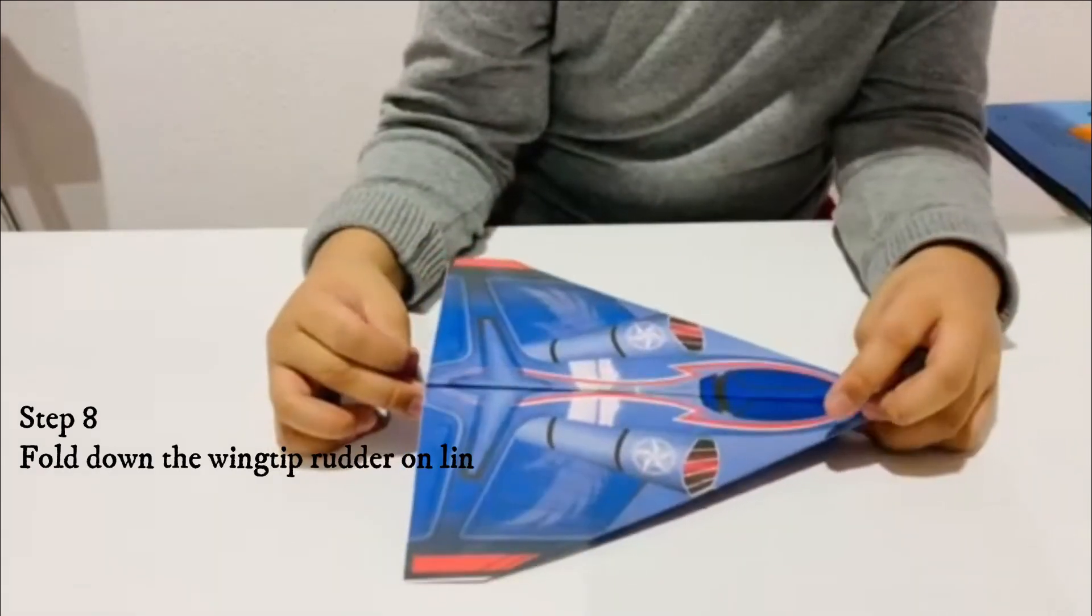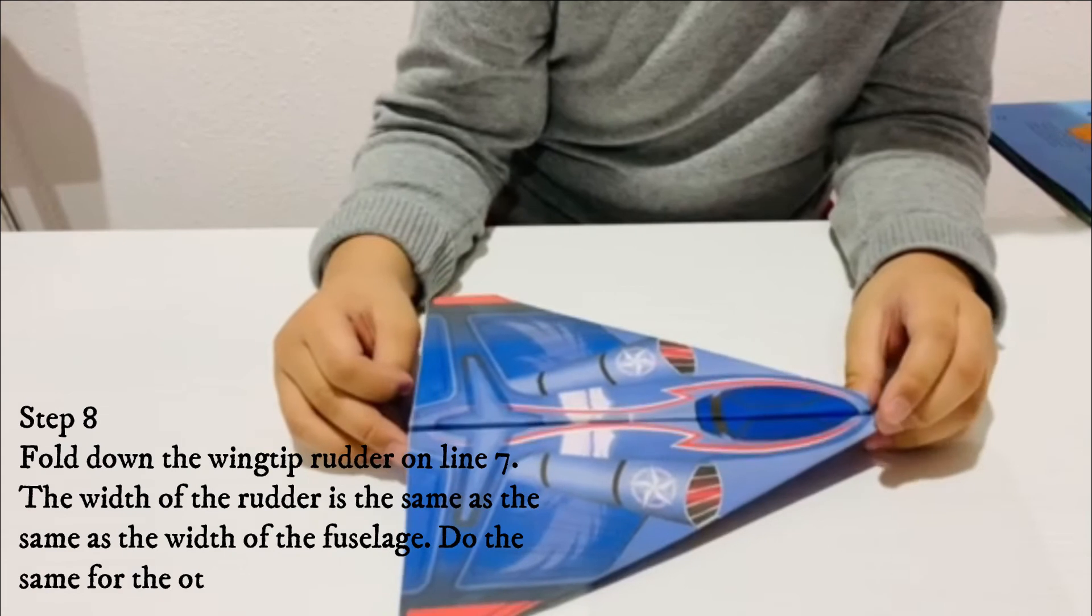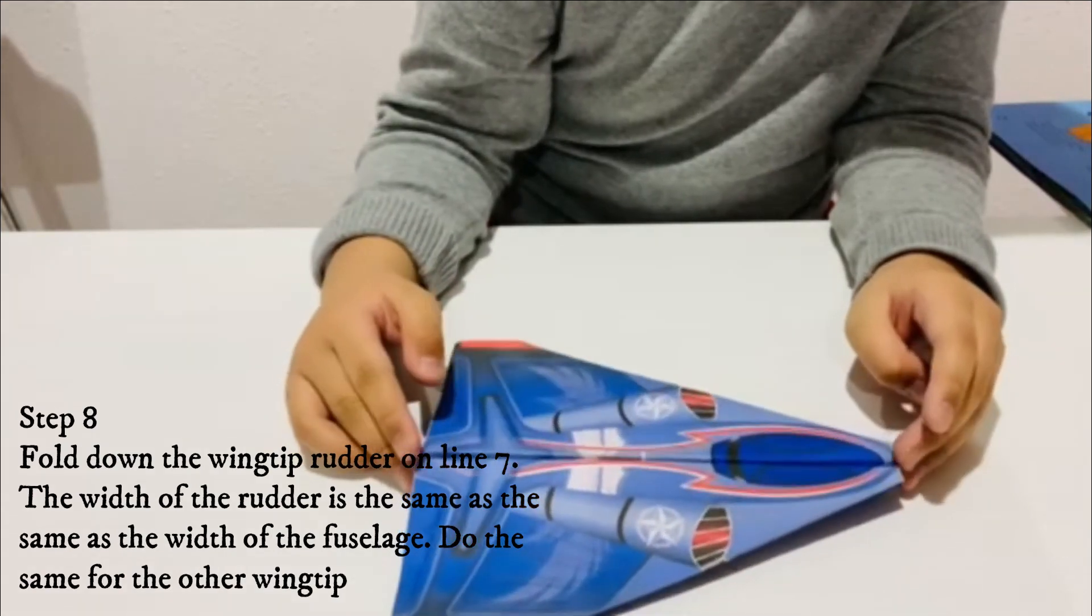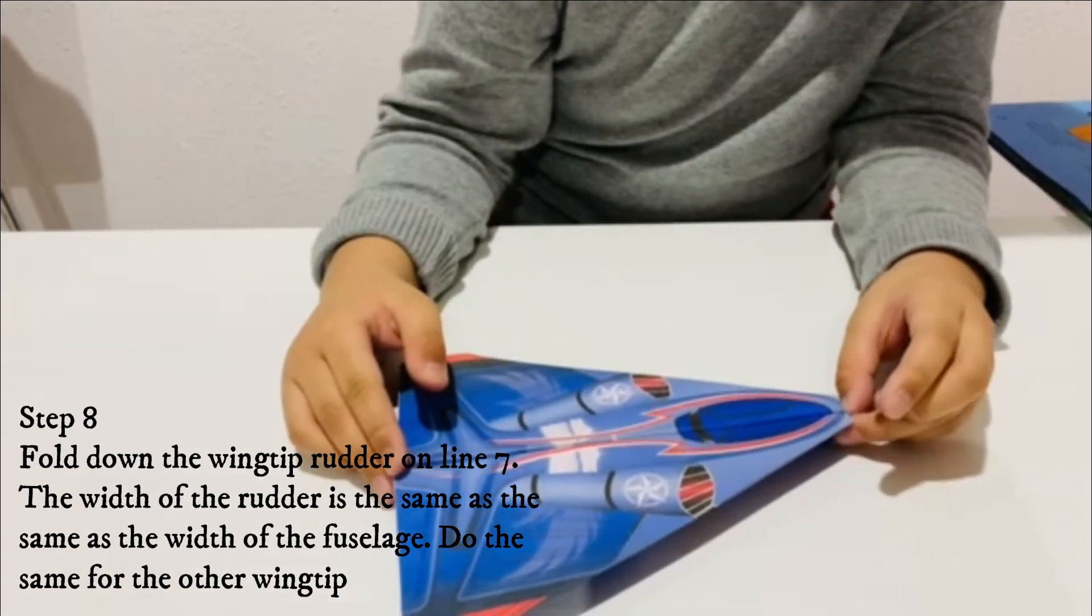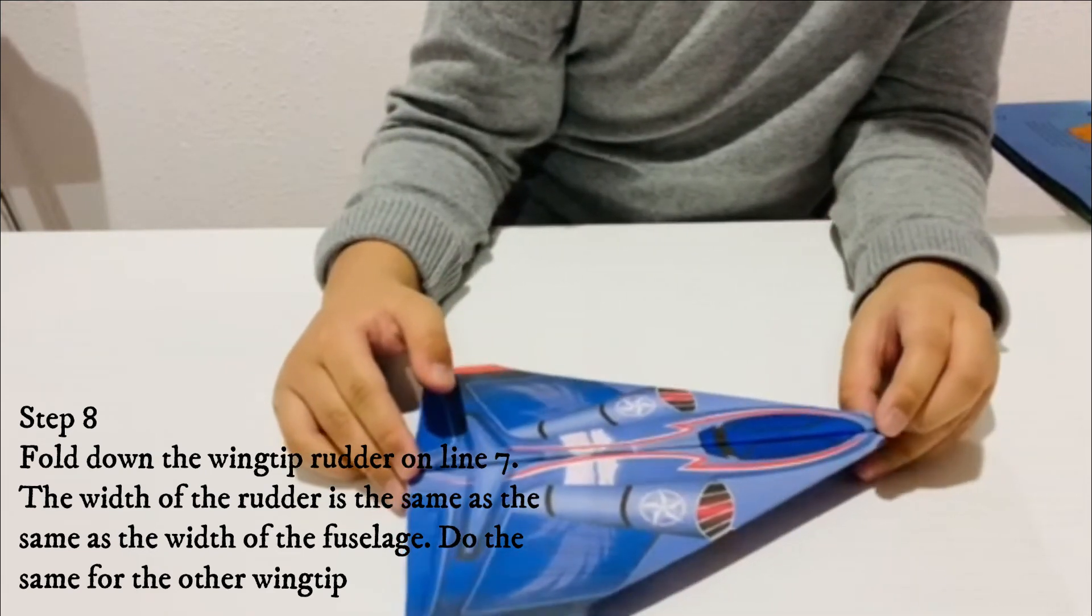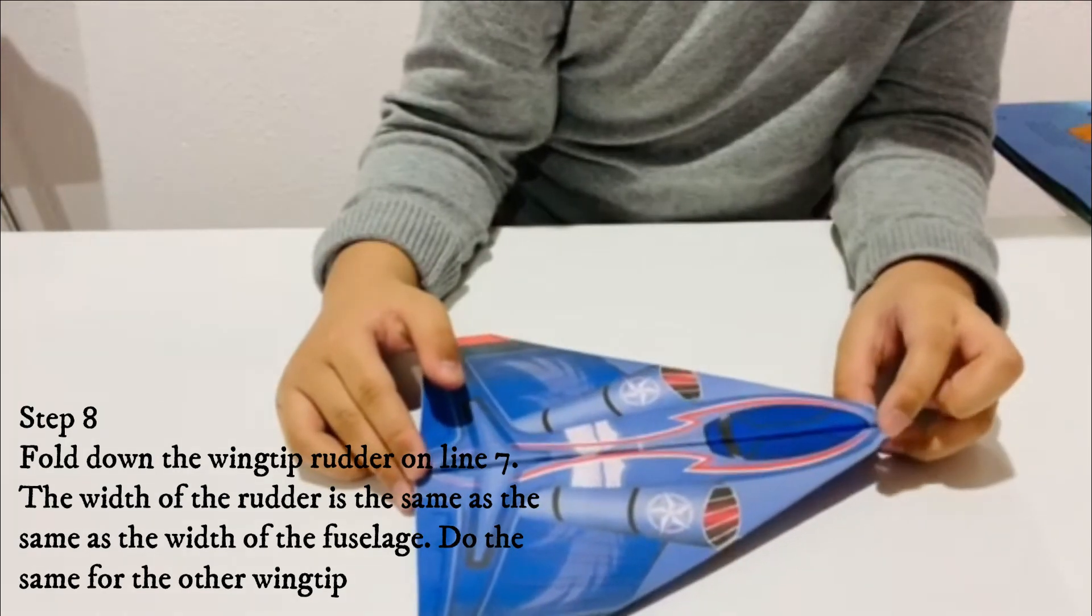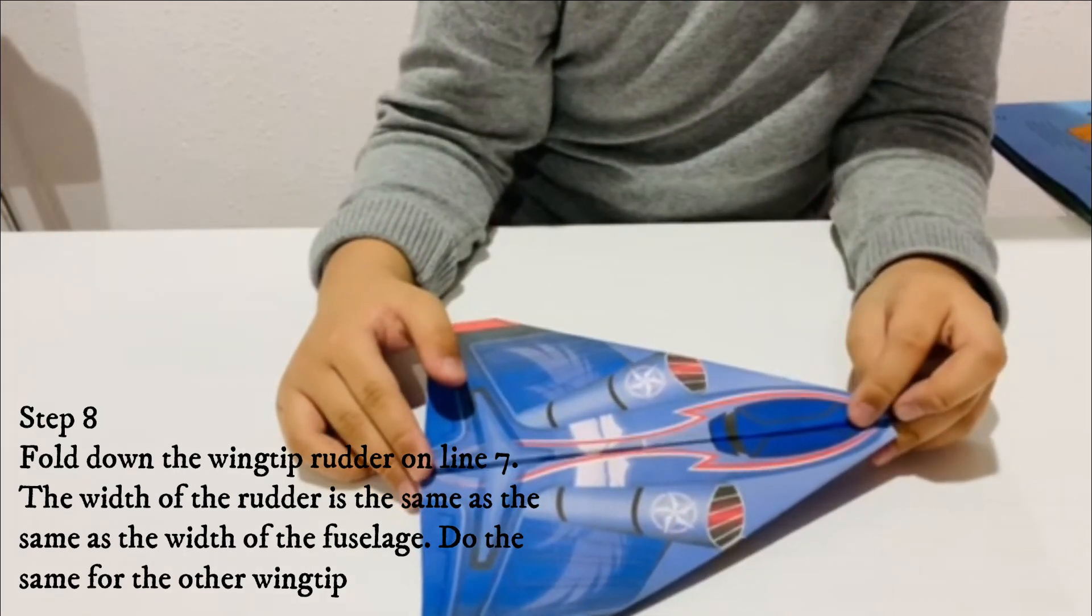Step 8: Fold down the wing tip rudder on line 7. The width of the rudder is the same as the width of the fuselage. Do the same for the other wing tip.